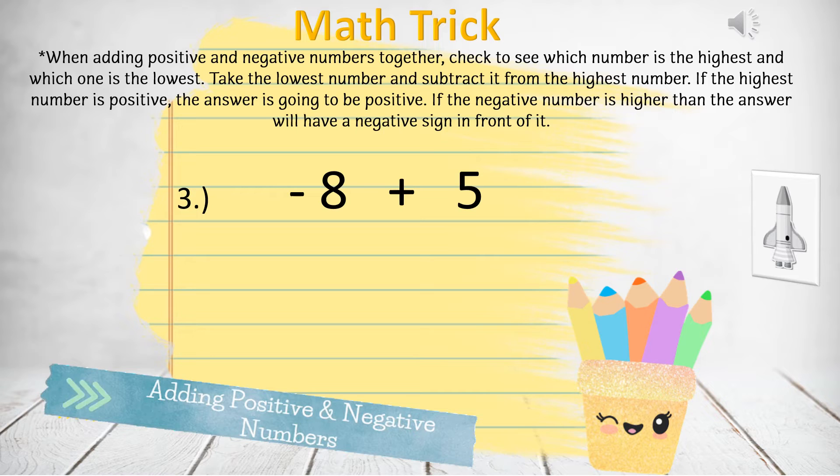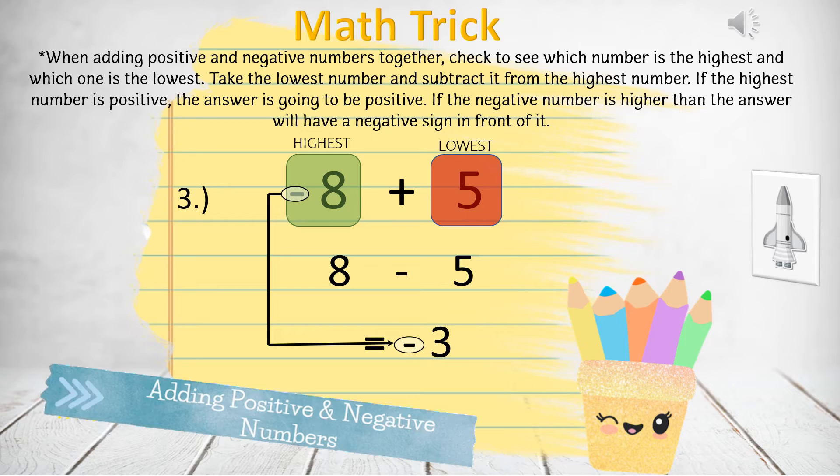Question number 3: negative 8 plus 5. 8 is the highest, 5 is the lowest. We subtract 8 minus 5 and that gives us 3. The highest number was a negative, so our answer is negative 3.